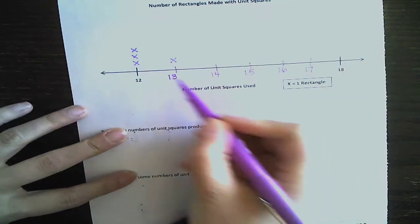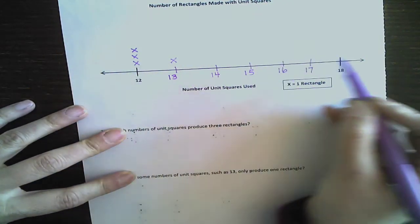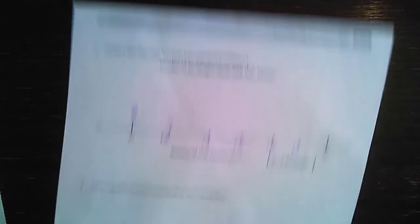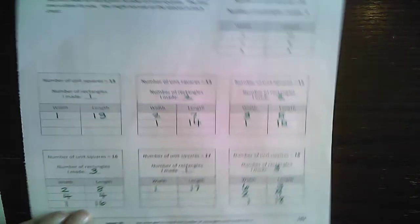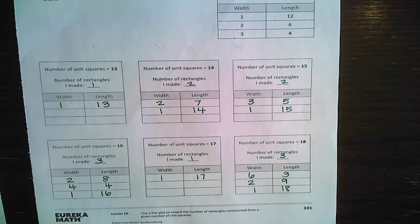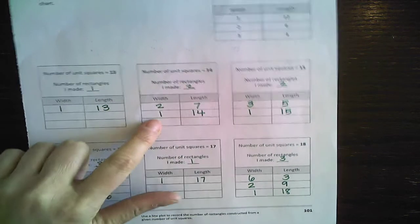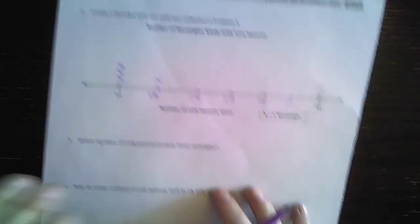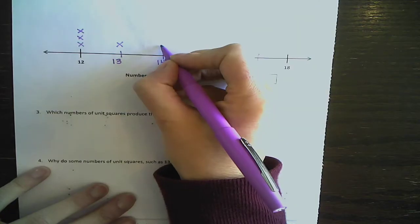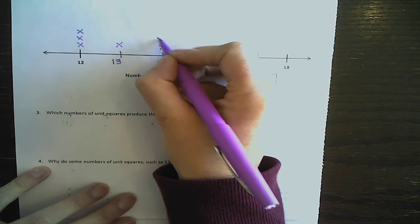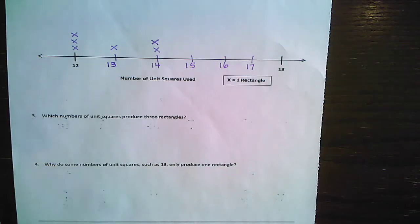14. And remember when you're making a line plot, you want that first X to be the same across. How about 14? How many did you get for 14? I got two times seven and one times 14. Did you get the same? Awesome. Let's plot two right there. One, two.